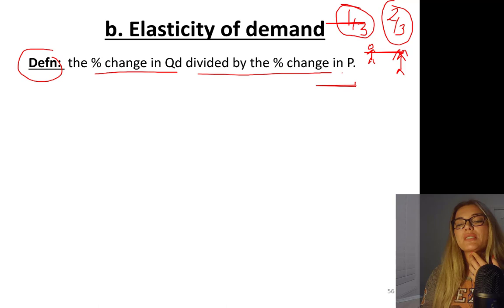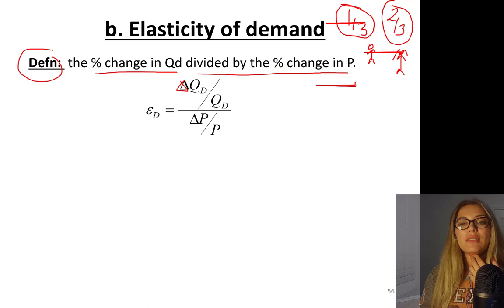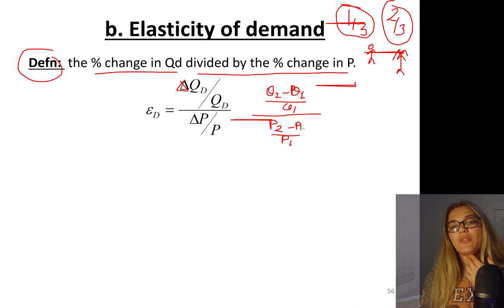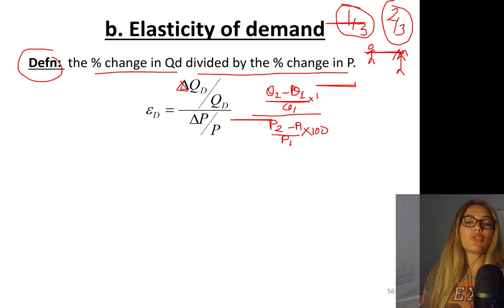So this is basically: change in quantity demanded — you can write it as final quantity Q2 minus initial quantity Q1, divided by Q1 — over final price P2 minus P1, divided by P1. You can of course multiply everything by 100, but because you have that 100 in both numerator and denominator, you can cancel them.